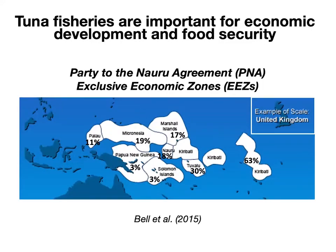Tuna fisheries play a critical role in economic development and food security in the tropical Pacific. The eight nations listed on this map with their exclusive economic zones, or EEZs, shown in white control 50% of the global supply of skipjack tuna, which is the most commonly canned tuna species. Through the Nauru Agreement, these eight Party to the Nauru Agreement, or PNA, countries manage their tuna by limiting the number of fishing days they allow in their waters every year based on scientific assessments of the tuna stock statuses.